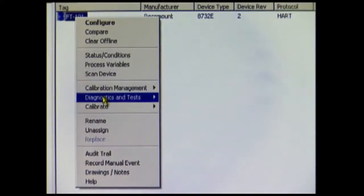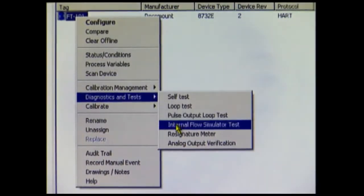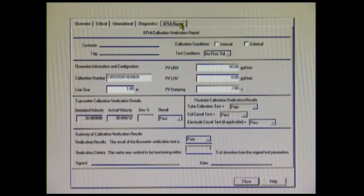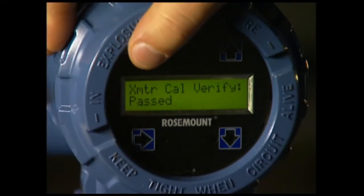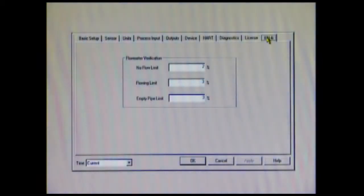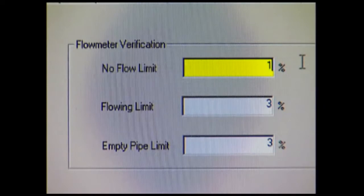With the 8714I diagnostic, you get a simple and straightforward method for running the verification that provides documented pass-fail results from the test, including quantified calibration deviation values for both the transmitter and the flow tube sensor. It's all tested to the pass-fail criteria you set for the application and conditions.